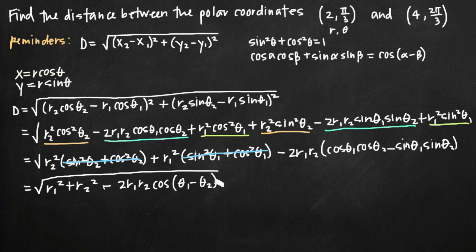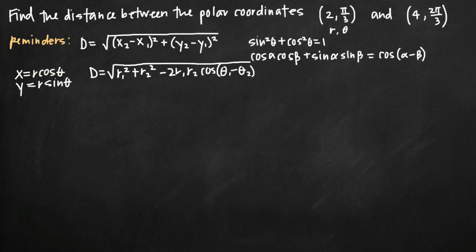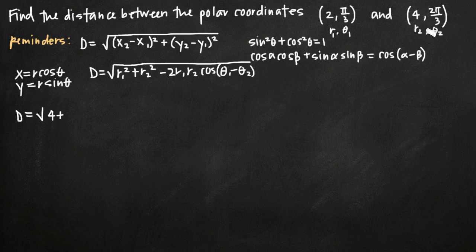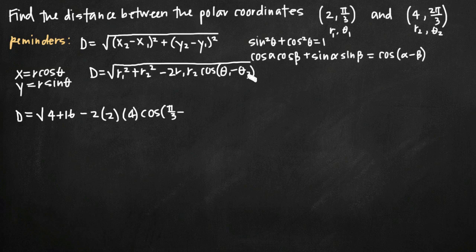Going back to our polar coordinates, we label (2, π/3) as r₁, θ₁ and (4, 2π/3) as r₂, θ₂, and plug these in directly. The distance is the square root of r₁² — which is 2² = 4 — plus r₂² — which is 4² = 16 — minus 2 times r₁ (which is 2) times r₂ (which is 4), times cos(θ₁ − θ₂), which is cos(π/3 − 2π/3). So we get cos(−π/3).